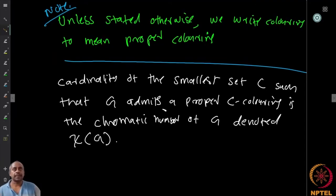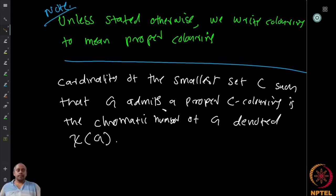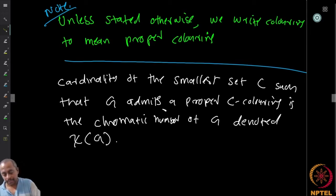Unless stated otherwise, 'coloring' means proper coloring. The smallest integer k such that the graph G admits a proper coloring using a set C of size k is called the chromatic number of G, denoted χ(G). So the chromatic number is the smallest number of colors that allow a proper coloring.